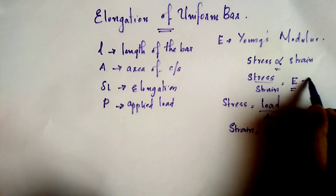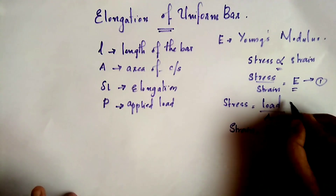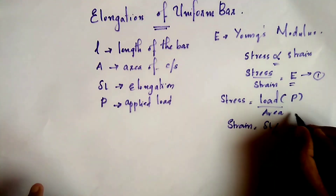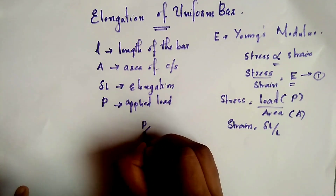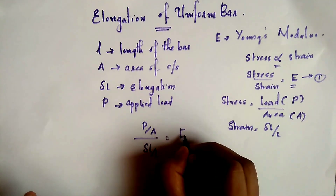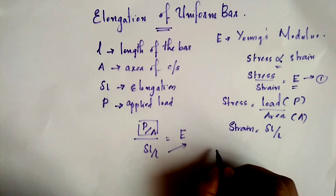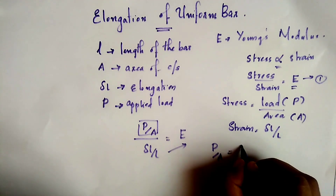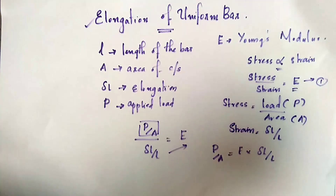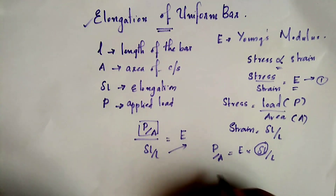This is our equation. Now, we substitute the stress and strain values. The applied load is P, and area is A. So stress is P divided by A. Strain is delta L divided by L. Therefore, P by A equals E into delta L by L.